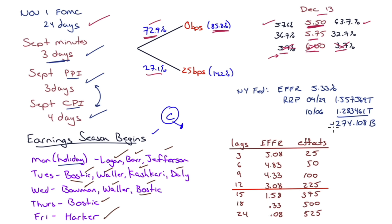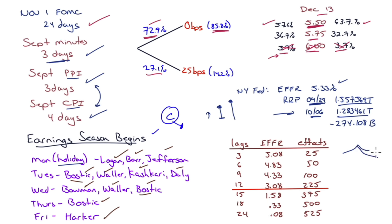The New York Fed effective federal funds rate is 5.33%. The reverse repo, which always spikes at end-of-month and quarter, came back down to 1.283 trillion — down 274 billion. Since the resolution of the debt ceiling, the reverse repo is down a full trillion dollars, primarily because of T-bill issuance. There is concern about whether there will be investors to pick up all this supply, but we're seeing money flowing into money market government funds every week, so there is appetite.